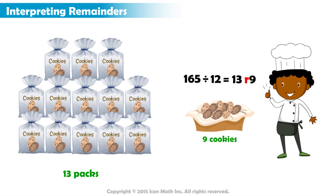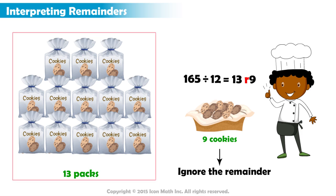We don't need to report this information. We can choose to ignore the remainder. This is one way of dealing with the remainder. So, Malik will sell 13 packs of cookies.